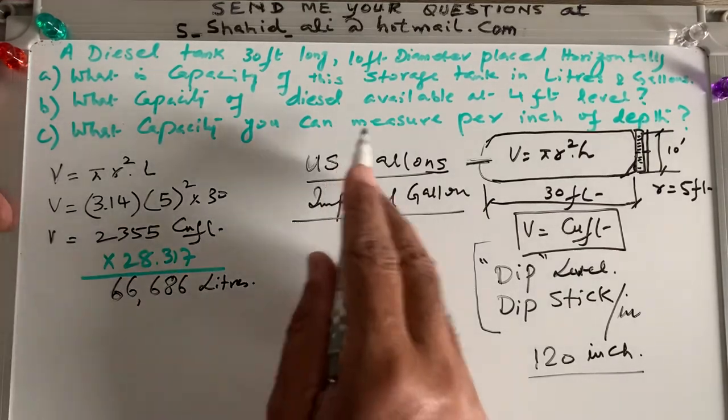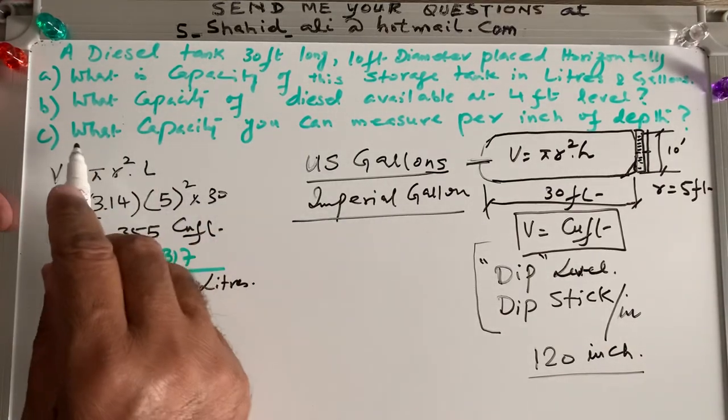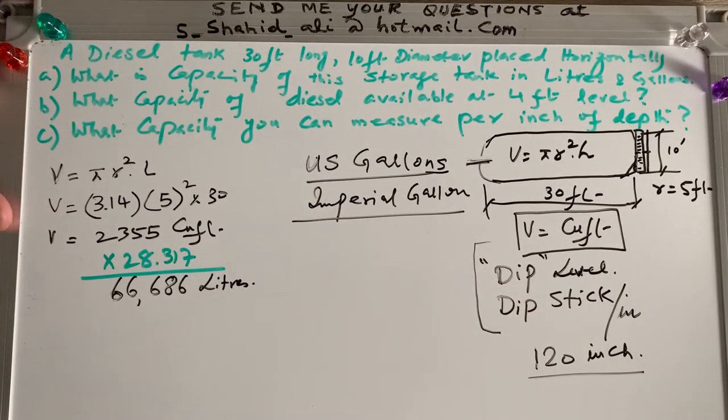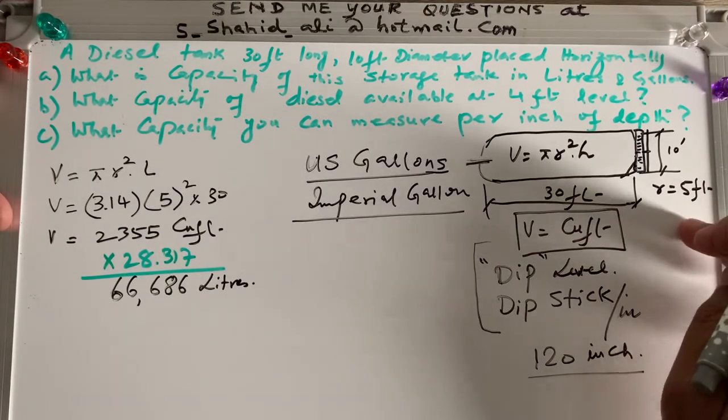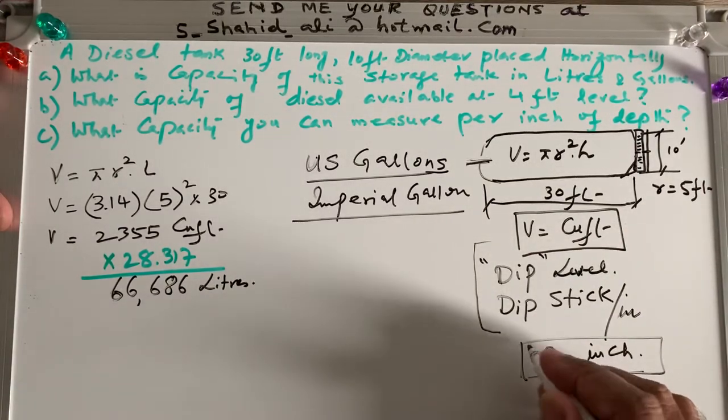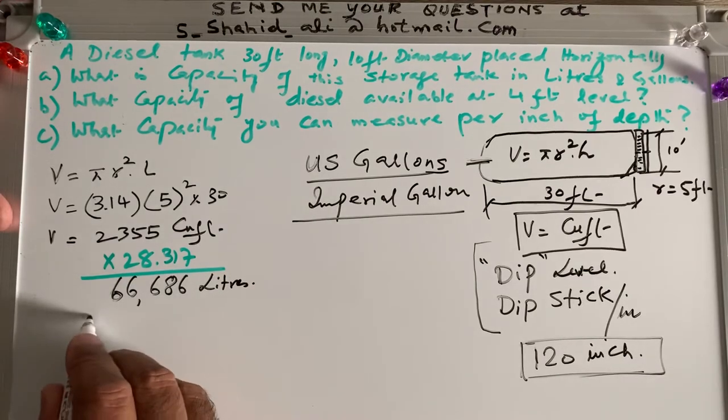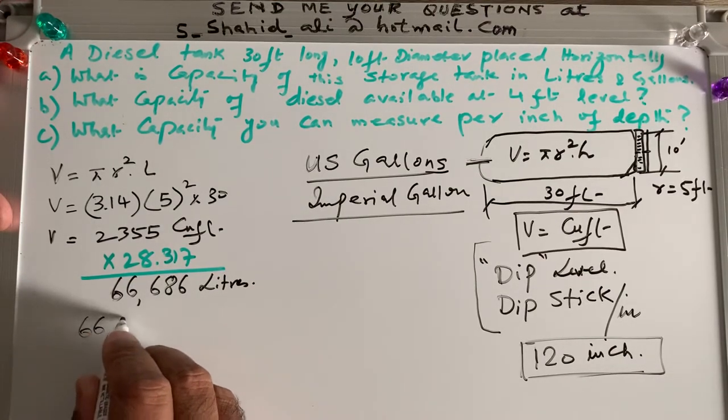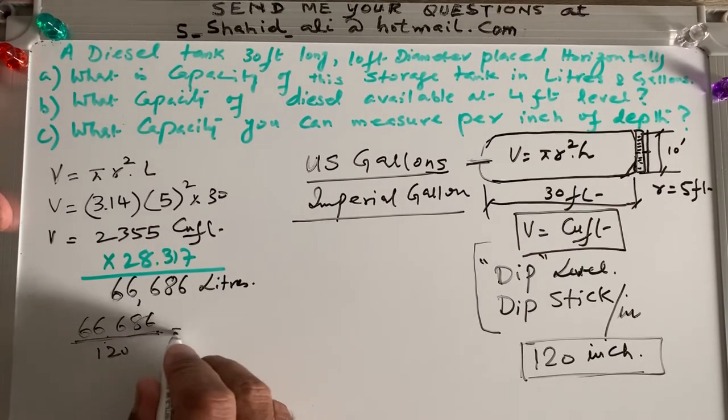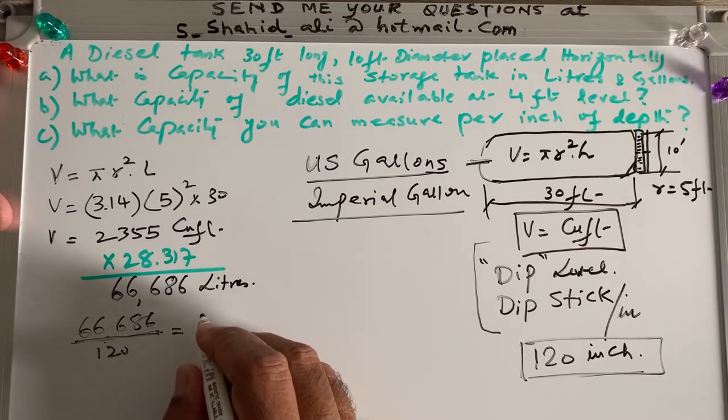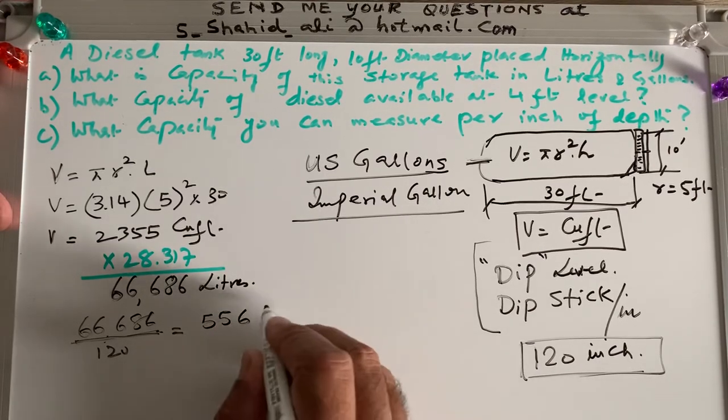I will do C part first. What capacity you can measure per inch of the depth. So per inch means this is the total quantity per 120 inch. We have 120 inch here available because my depth is diameter. And diameter is 10 feet, which is 120 inch. So I have to divide these liters, 66,686 divided by 120. If I divide by 120, that will be my liters per inch. So I divide it by 120 and I get, like I am rounding it off, 556 liters per inch.